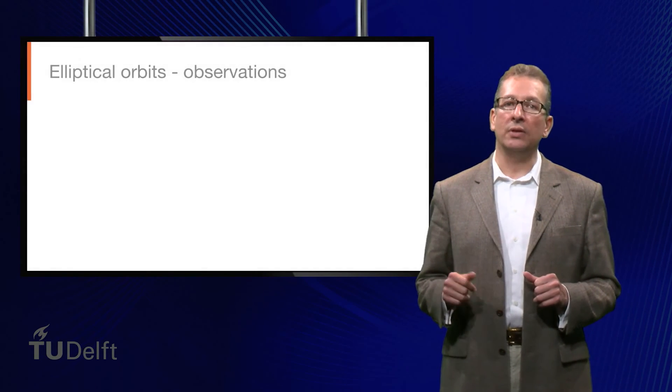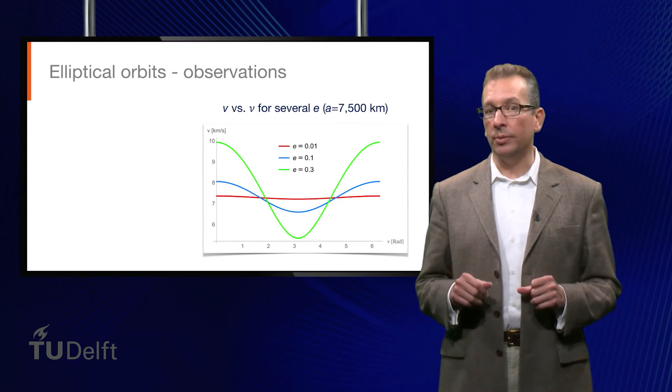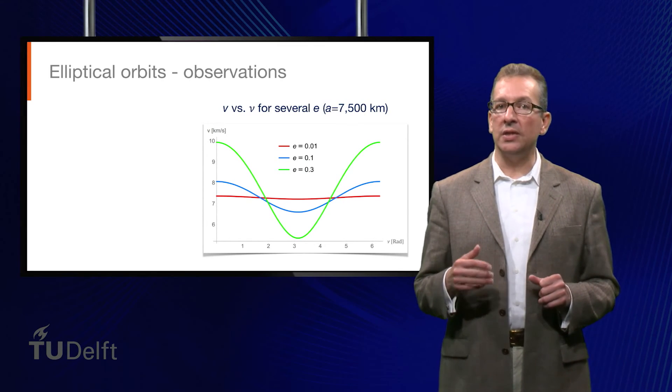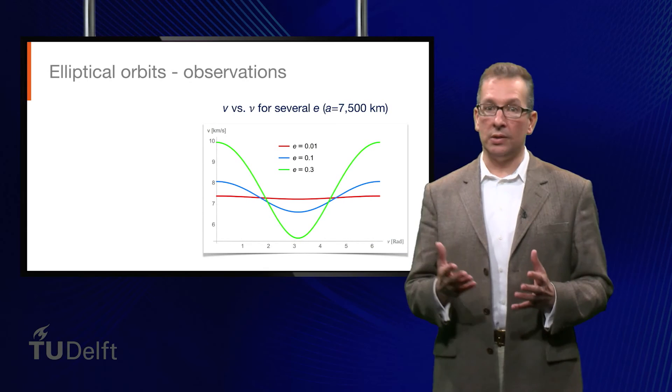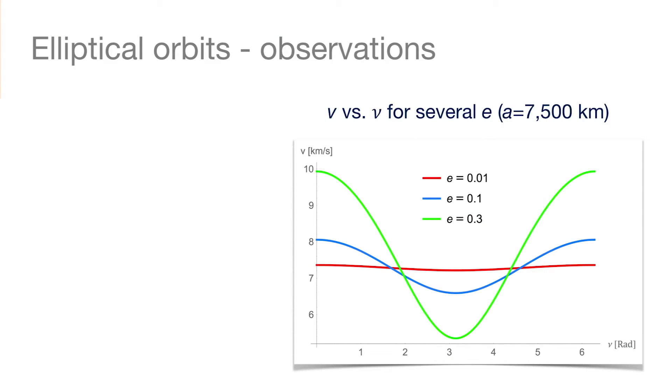Let's get a feel for what happens to the velocity as well. Here we've plotted the speeds on the same orbits against the true anomaly, so that we can see where our spacecraft speeds up and where it slows down. For the red orbit, with the lowest eccentricity, we see that the variation in speed is minimal, similar to the variation in radius before. And the greater the eccentricity, the greater the differences in speed along the orbit. Note also that at perigee, where the true anomaly is zero, the speed is highest. And at apogee, where the true anomaly is 180 degrees or pi radians, the speed is lowest.